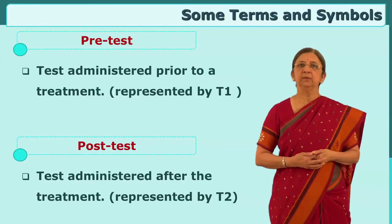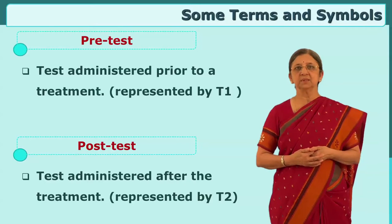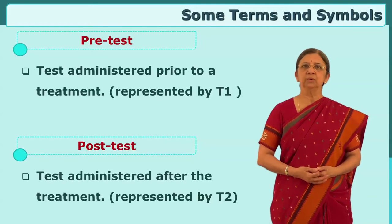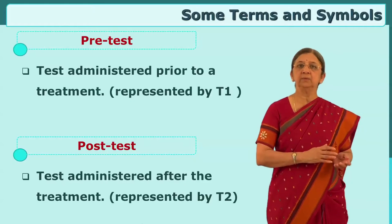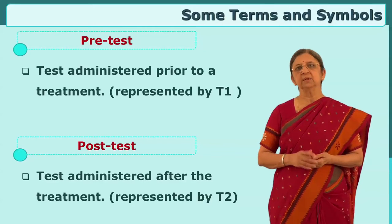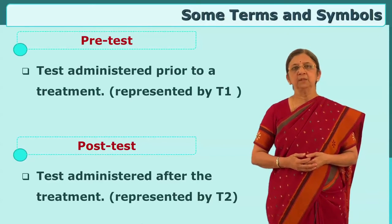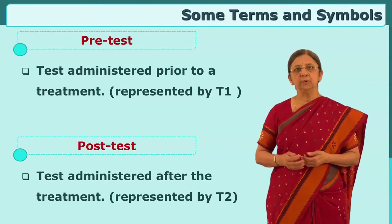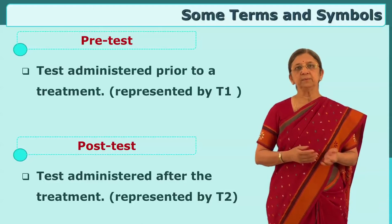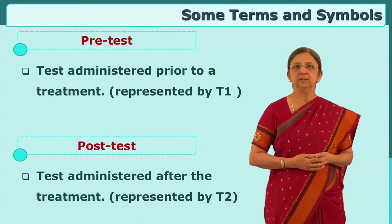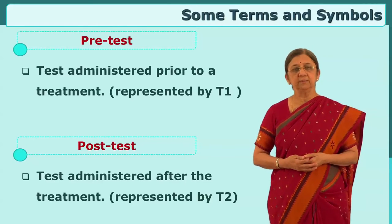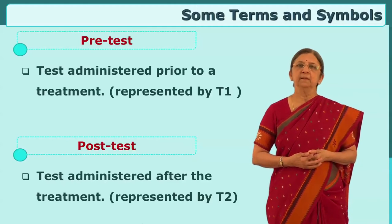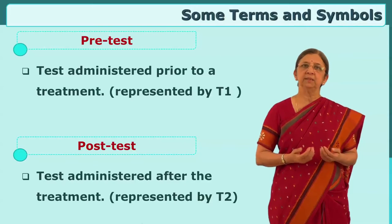Associated with the experimental and control groups are two other terms: pre-test and post-test. The pre-test is given prior to conducting the experiment, and the post-test is given after the treatment. Pre-test scores are termed T1 and post-test scores are termed T2. The difference between T1 and T2 is what the researcher is interested in — is there a difference, is it a significant difference, and why does this difference exist?